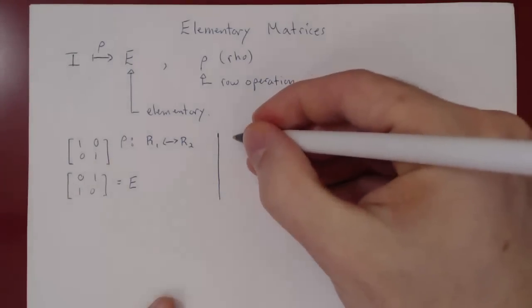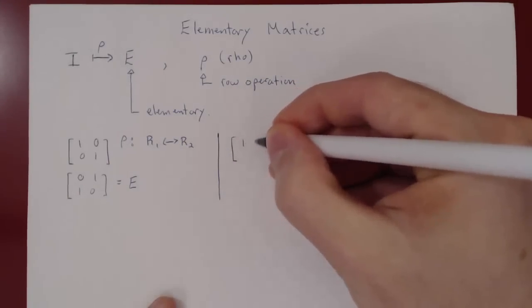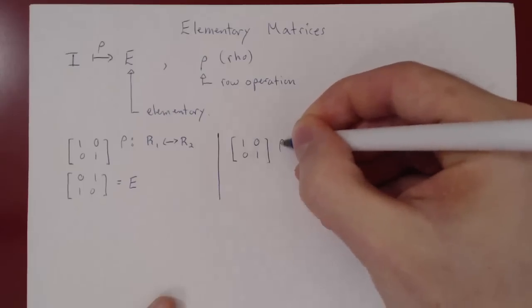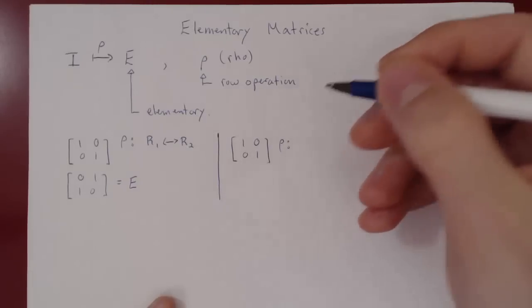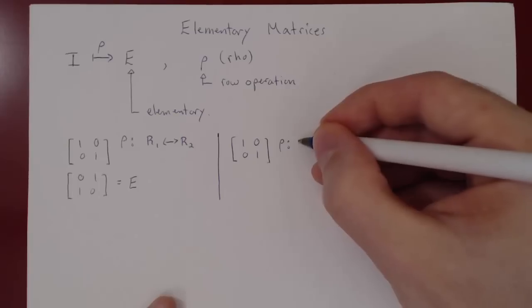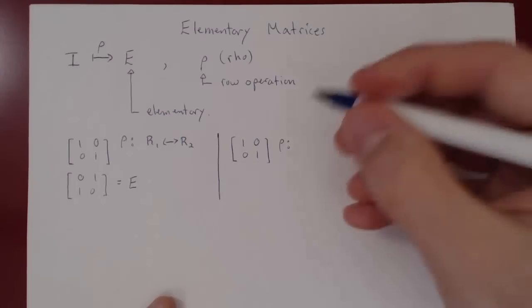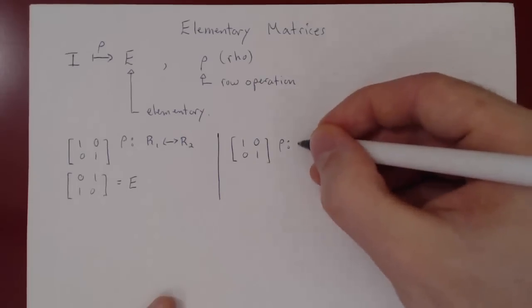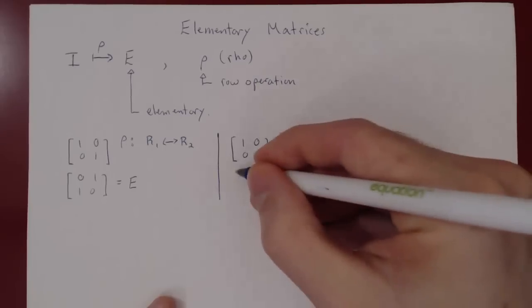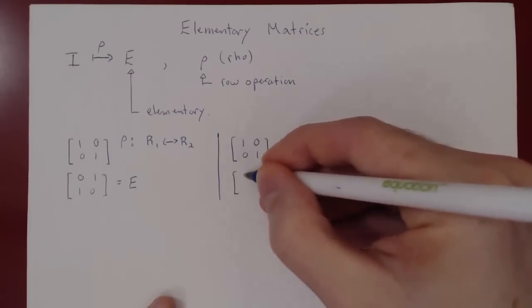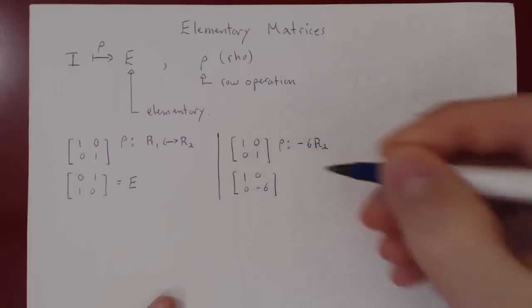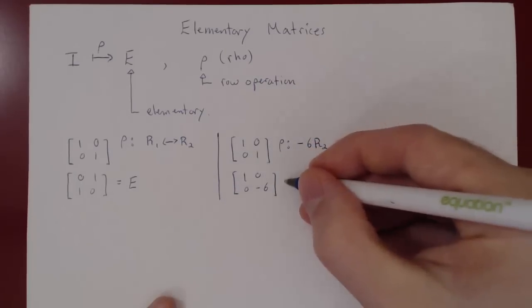We could start with I = [1, 0; 0, 1] and apply a different kind of row operation. Suppose we multiply row 2 by negative 6. Then the matrix becomes [1, 0; 0, -6]. And this is, again, an elementary matrix.